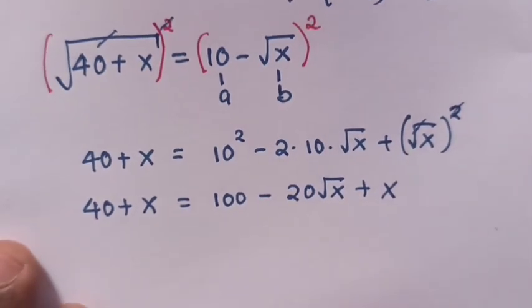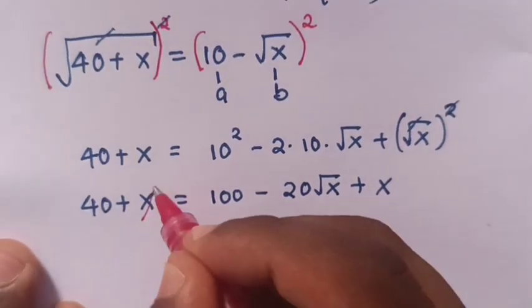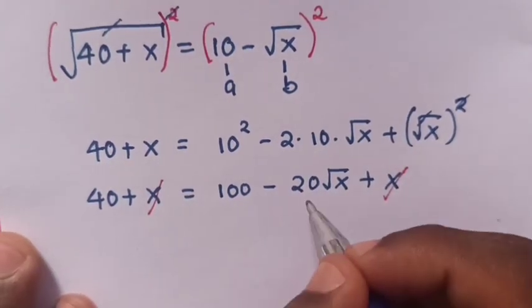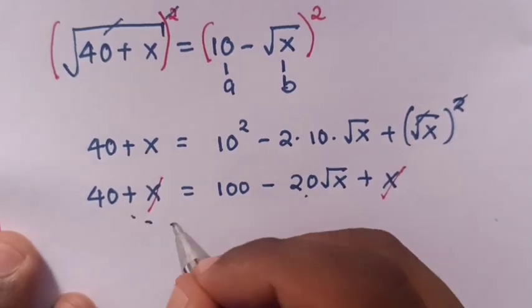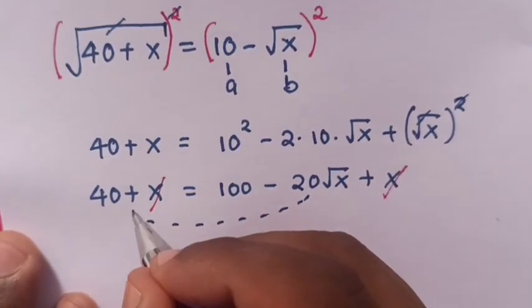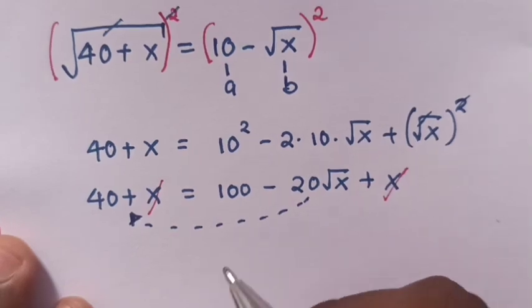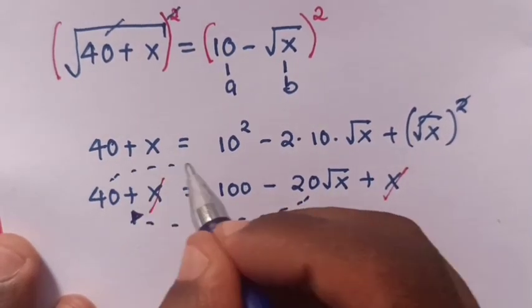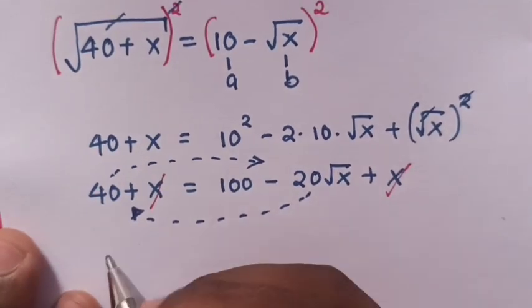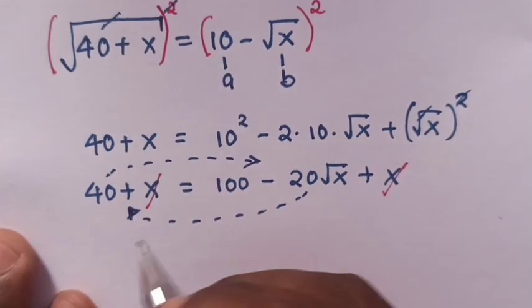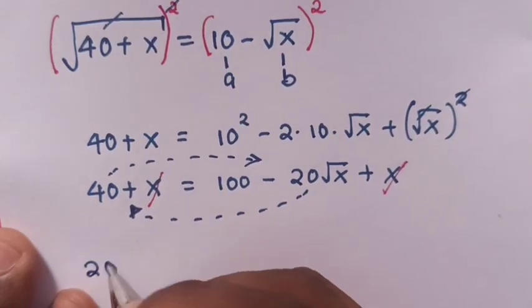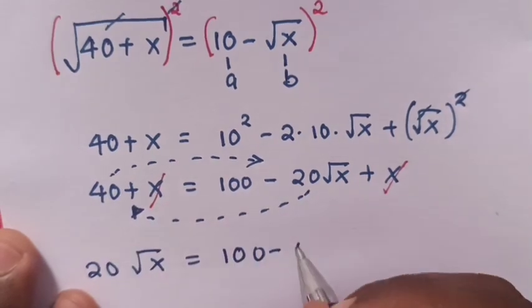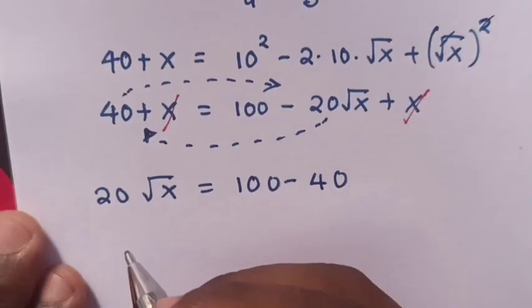Then, from our equation, x and x will cancel. We take negative 20 square root of x to the left side and 40 to the right side of the equation. So our equation will be 20 square root of x equals 100 minus 40.